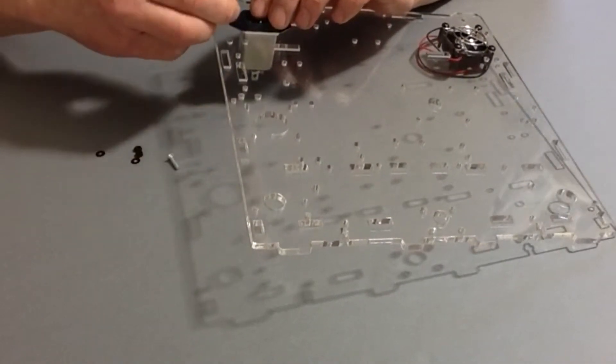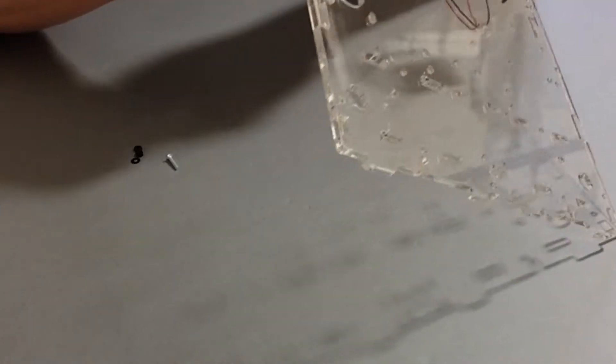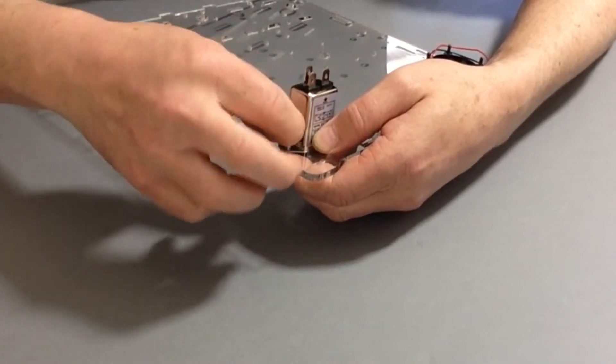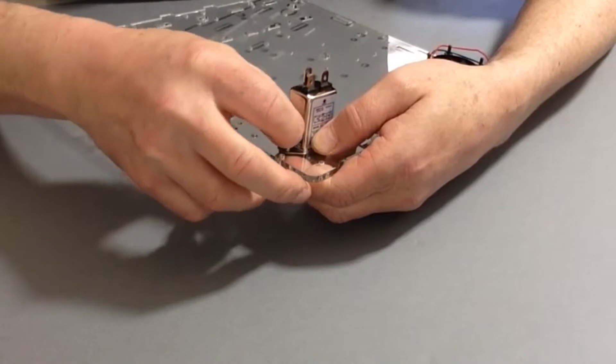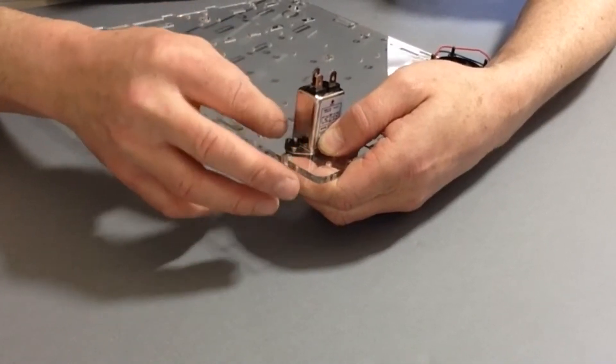Take the countersunk screws and place those through. Put the washer on the other end, turn that over, and take one of the M3 nuts and screw it on.